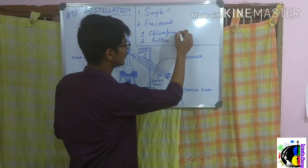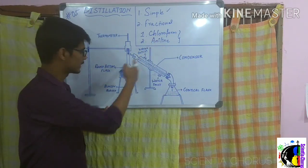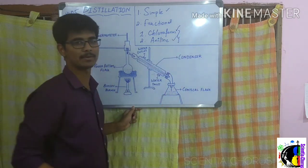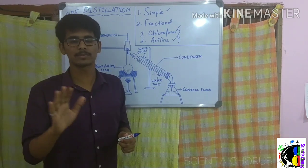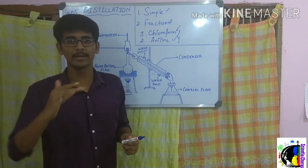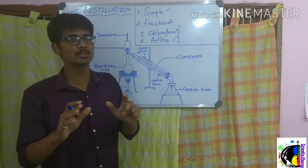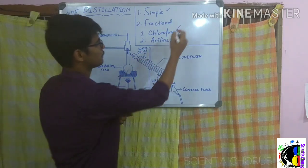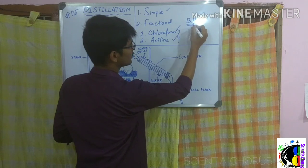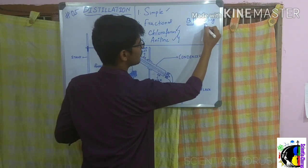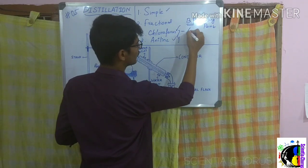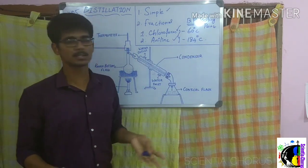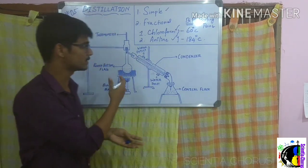We are taking the mixture of chloroform and aniline in the round bottom flask. Each liquid has a particular boiling point. In simple distillation, if the difference in boiling points is more than 25 degrees Celsius, we can easily perform simple distillation; if it is less than 25 degrees Celsius, we go for fractional distillation. The boiling point of chloroform is 60°C and aniline is 184°C, so the difference is more than 25°C and we can easily separate them using simple distillation.